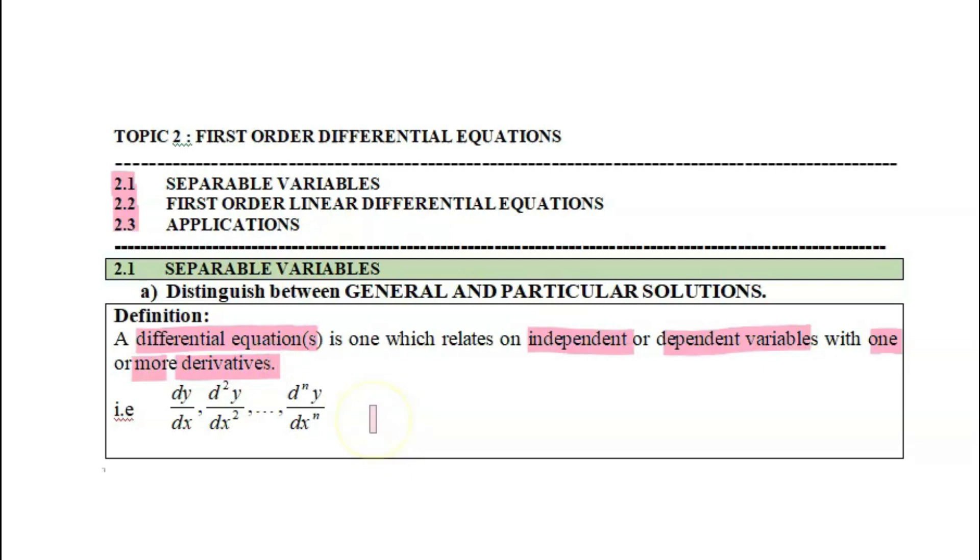In an equation we have independent variable, dependent variable, as well as derivatives such as dy over dx, d2y over dx square, or any higher derivatives—one or more in every equation. So that is the definition for differential equation.